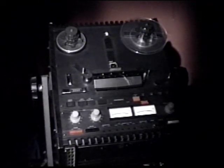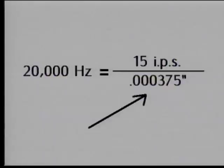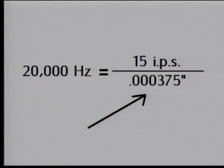In audio, the highest frequency that has to be recorded is about 20,000 cycles per second. This means that at 15 inches per second tape speed, you'll need a head gap of about 0.000375 of an inch. This was totally manageable in the 1950s and made for excellent quality audio recordings.